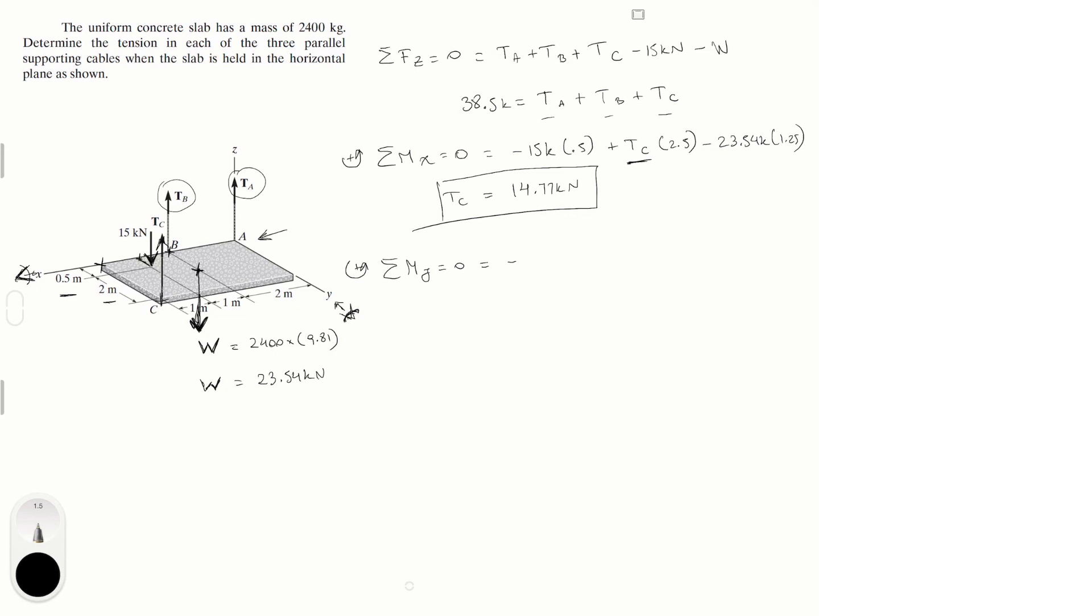Which is minus T_B times 2, because the distance from B to A is 2 given right here, plus the weight times 2, because the weight is also at the halfway point and the distance from here to here is 2, minus tension C times 4, because the tension is at the other end of the slab which has a length of 4 meters, plus 15k times 3. The 15k from the y-axis has a distance of 3 meters. And we have the weight which we found right here, and we have tension C which we found right here. So if we plug those numbers in and we solve for tension B, you should get that tension B is equal to 16.5 kilonewtons.